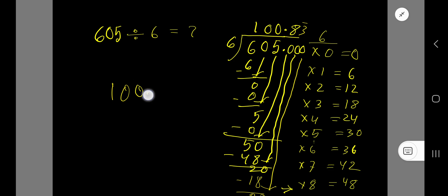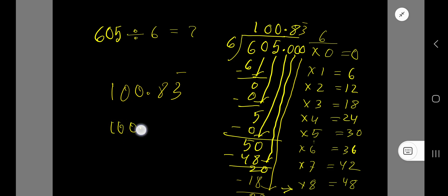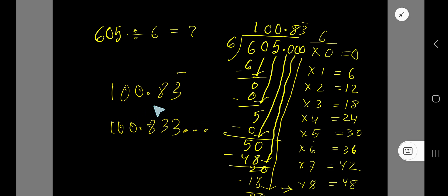Our answer is 100.83 with a bar over 3, indicating the 3 repeats. You can also write it as 100.833... — writing 3 digits after the decimal and then a dot to show the process is continuing. You can write your answer in these two ways.